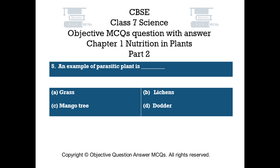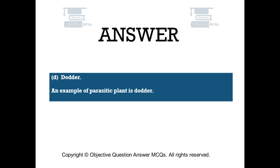Question number 5: An example of a parasitic plant is. Option A: grass. Option B: lichens. Option C: mango tree. Option D: dodder. The right answer is option D — dodder. An example of a parasitic plant is dodder.